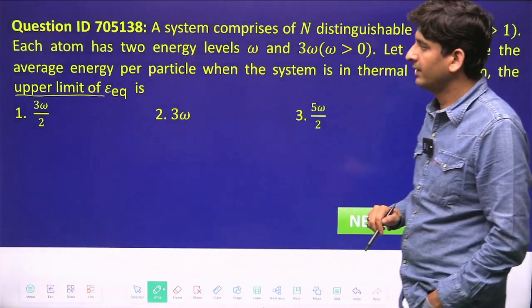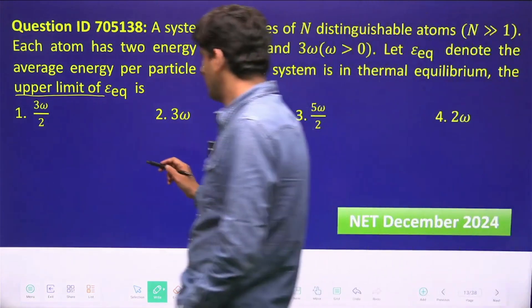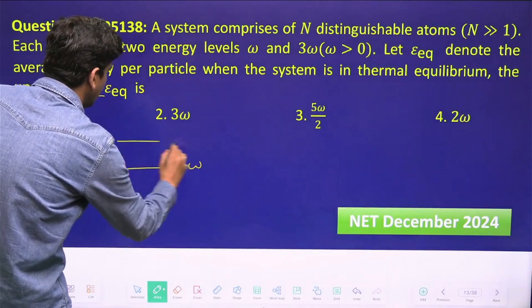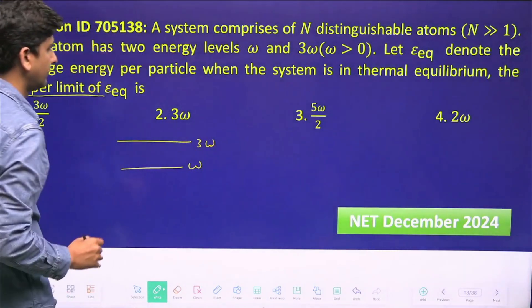Let E_eq denote the average energy per particle. When the system is in thermal equilibrium, we have to calculate the upper limit of E_eq.